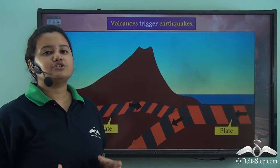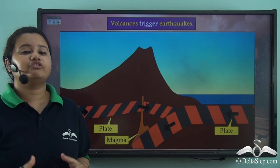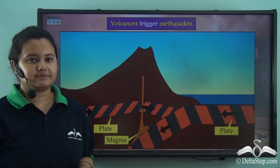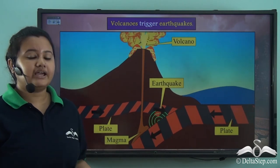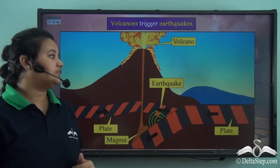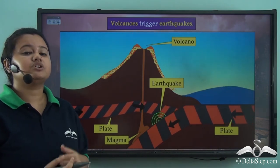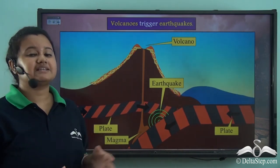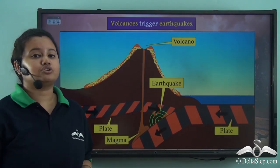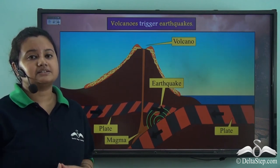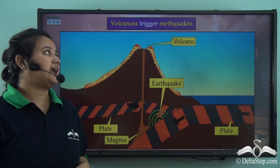Apart from movement of tectonic plates, another important natural cause of an earthquake is volcanism. As two tectonic plates collide, it creates pressure on the magma chamber, and the magma tries to escape to the earth's surface through cracks, leading to a massive volcanic eruption. This tremendous explosion of a volcano unsettles or destabilizes the earth's surface, thereby causing an earthquake.